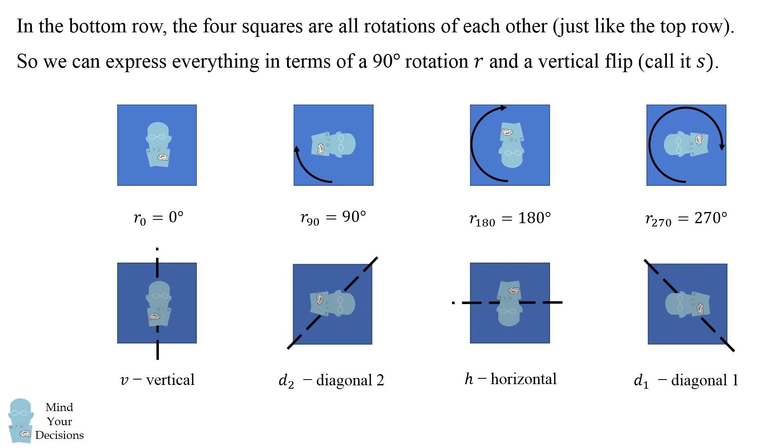So this will give us another way to present these symmetries which will be useful. We can express everything in terms of a single 90 degree rotation, we'll call that R, and a vertical flip which we'll call S.